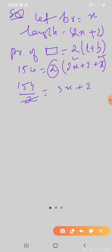So three x plus two is equal to seventy seven. Three x is equal to seventy seven minus two.